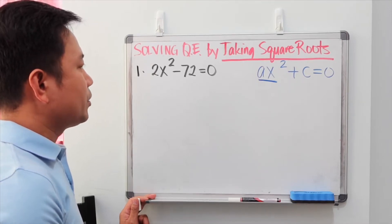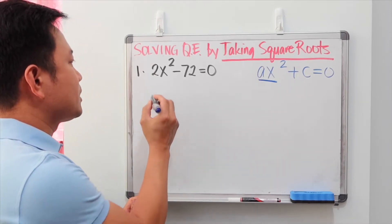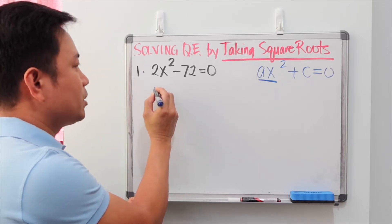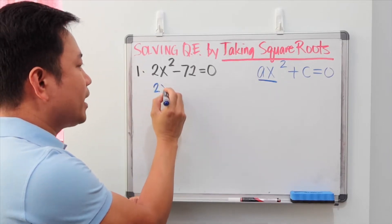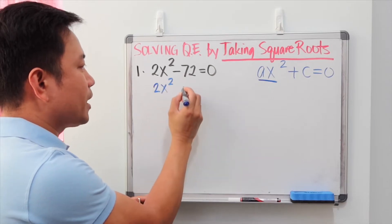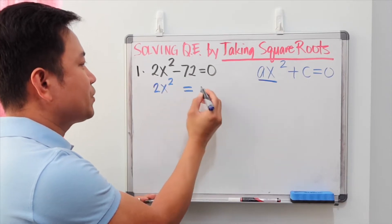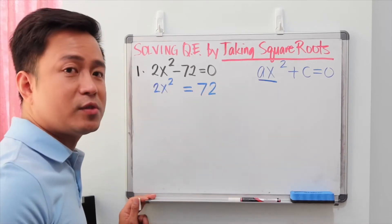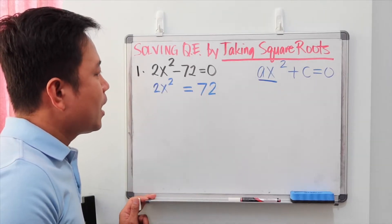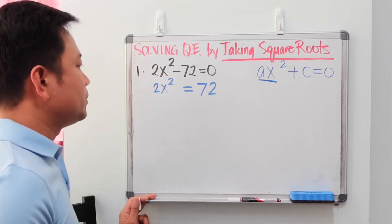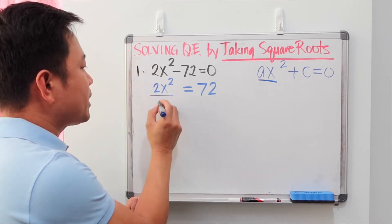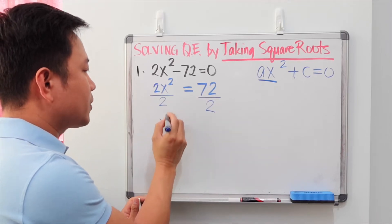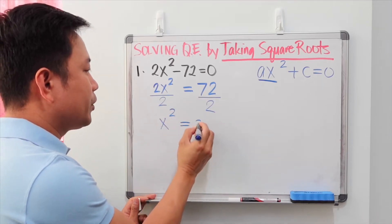In the square root method, the first step is to isolate x squared on the left side of the equation. We need to add 72 to both sides, transferring negative 72 to the right so it becomes positive 72. Then we divide both sides by 2, giving us x squared equals 36.